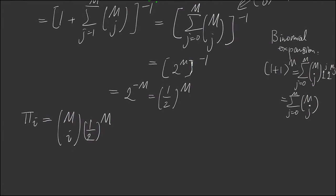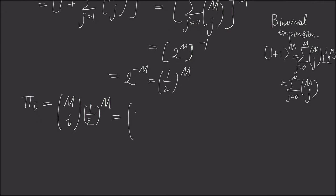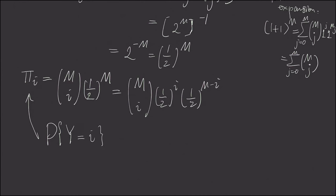And if we solve pi i from the equation we covered in previous lecture, we'll see that this is nothing but m choose i, multiplied with pi 0, which we have solved. And this is nothing but a binomial distribution of capital M and one half.